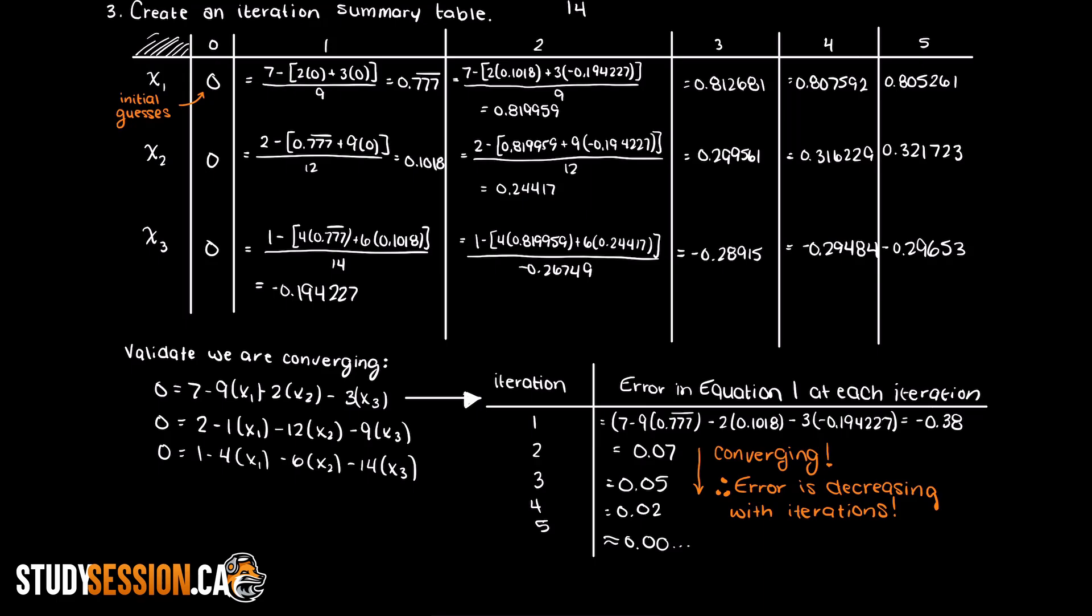If your answer begins to deviate farther and farther from 0, then you have a diverging solution which likely means that you need a better starting guess for your x matrix or that your matrix is singular and doesn't have a unique solution.